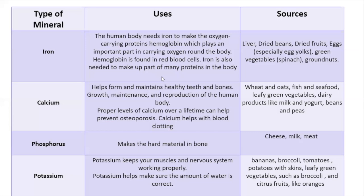Along with calcium, we have a mineral called phosphorus, which also helps in making the bone hard — it makes the hard material in bone. It is mainly found in dairy products and meat.